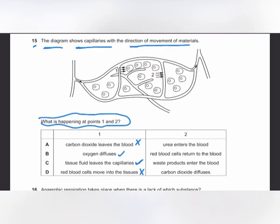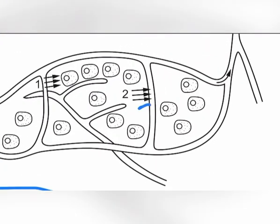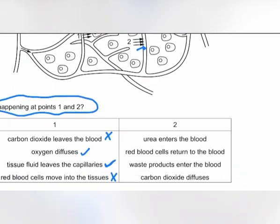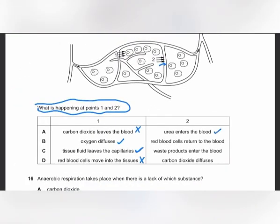At point 2, substances enter the blood. Urea enters the blood — that is correct. Red blood cells cannot return to the blood since they never left it. Waste products enter the blood at point 2. The answer is C.